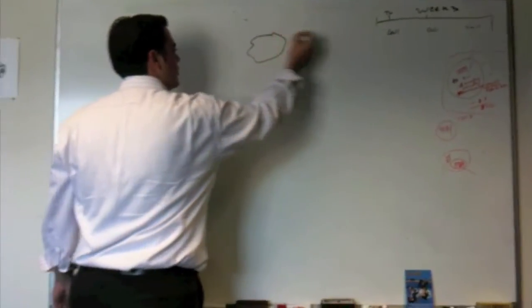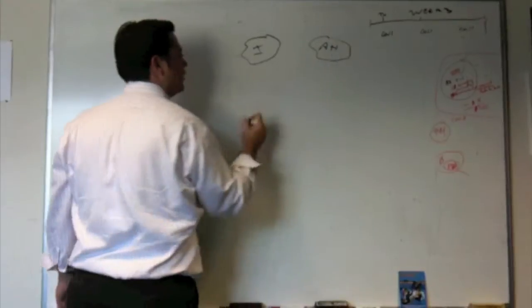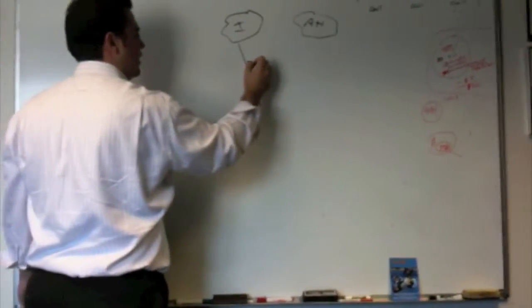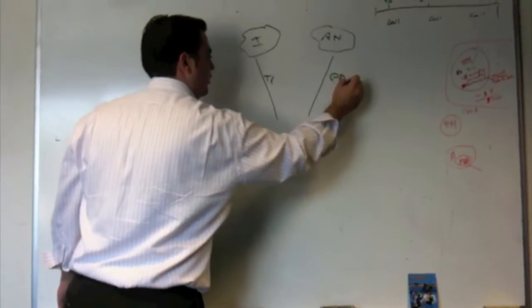All right, so this is how most customers are set up. They've got the internet, they've got a telecom carrier. They've got a T1 to the internet, and they've got a PRI to their phone lines.